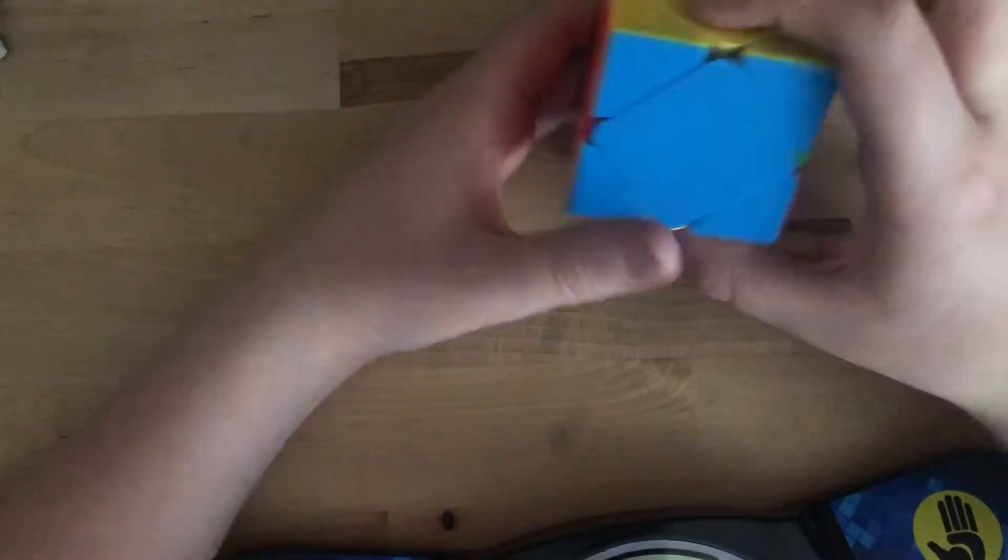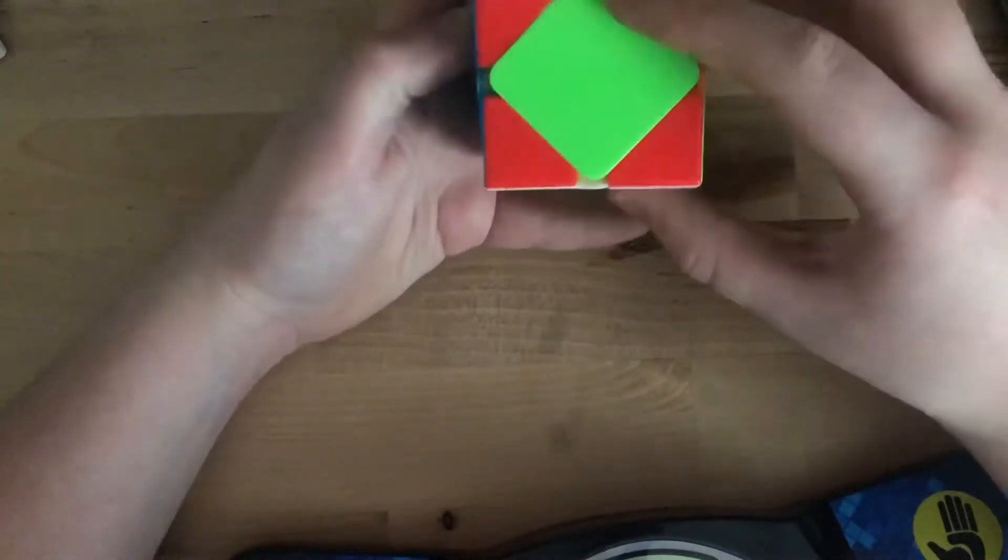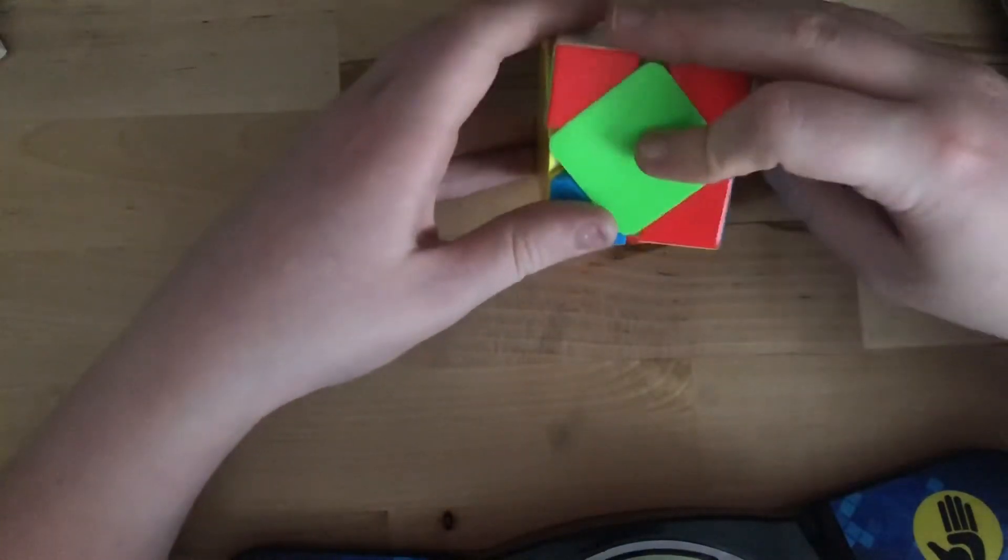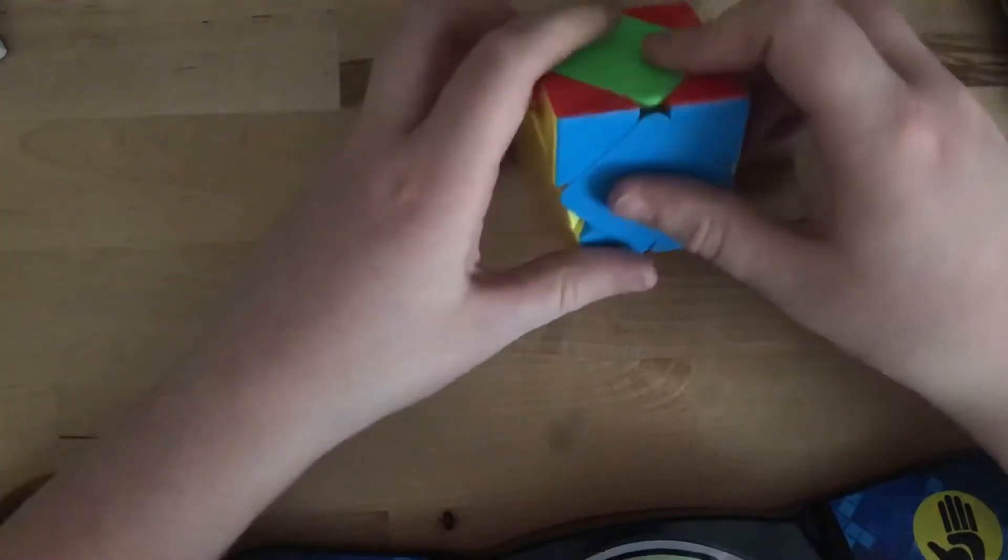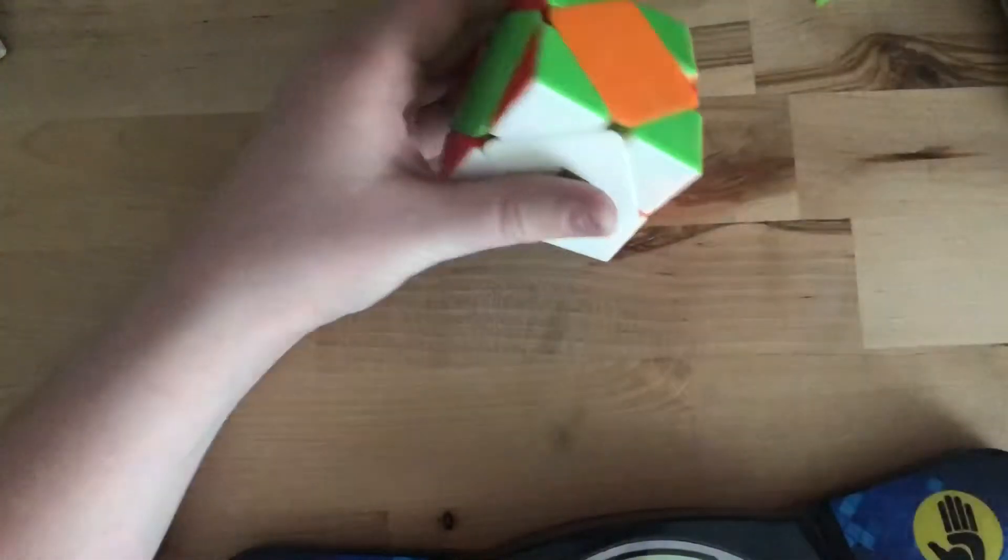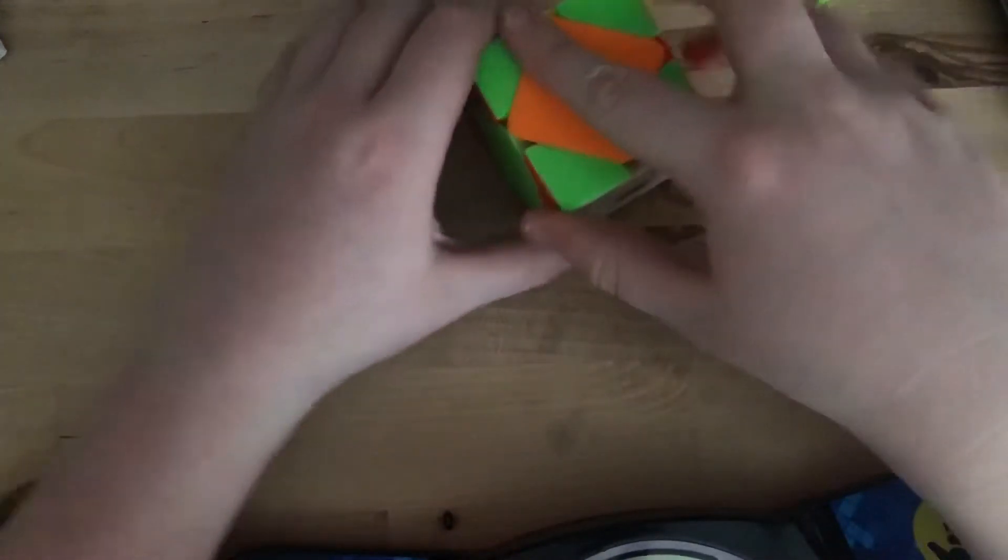So if you get the one where there is no center solved, just hold the white to the right and yellow to the left and do the right prime, left, right, left prime, and you'll get one center solved. So now we're on to this.